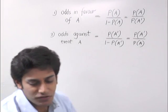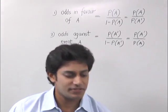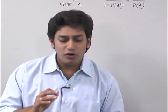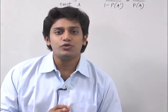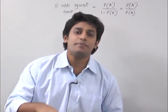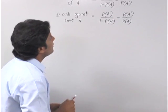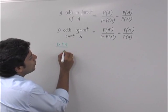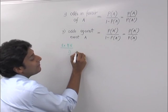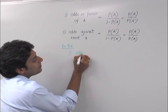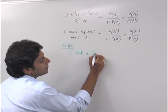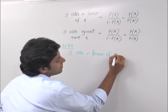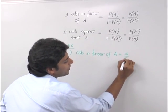Let's attack the first sum. Exercise 11.6, sum number 1. Given. Odds in favor of A are 4 is to 5. What is P of A? So I will start the sum this way. Exercise 11.6, sum number 1. Given. Odds in favor of A, it is given to me it is 4 upon 5.